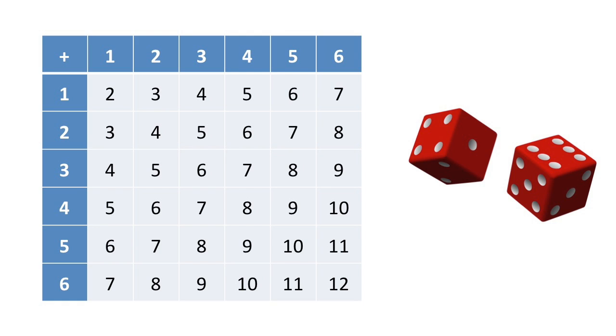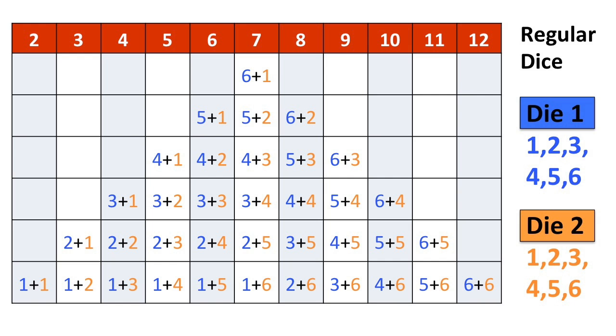So for example, if die 1 is a 3 and die 2 is a 5, we get 8. In fact, you see that there are 5 ways to produce the number 8. This table shows the frequency distribution of all the possible outcomes, the numbers from 2 to 12.